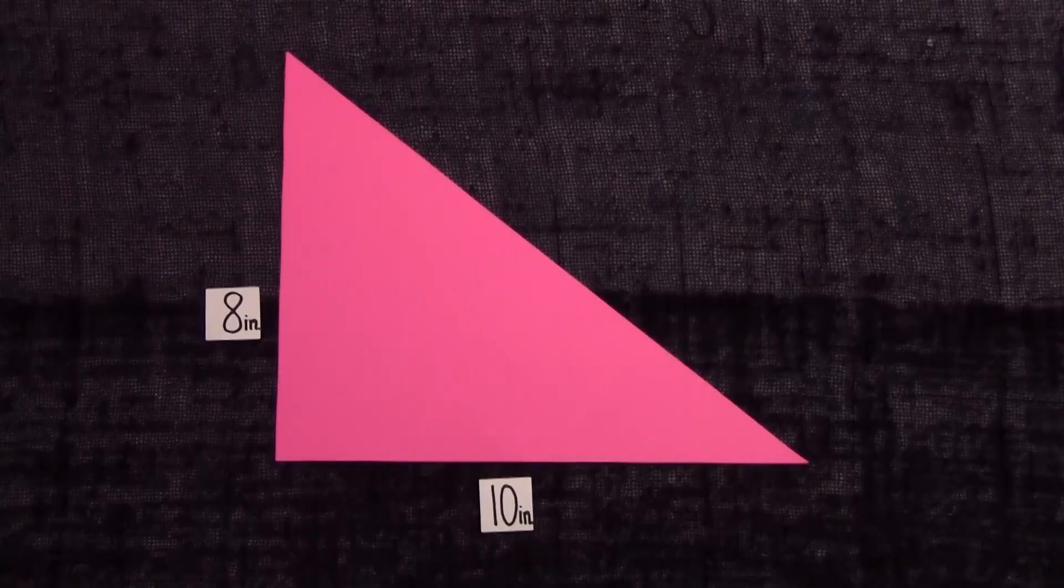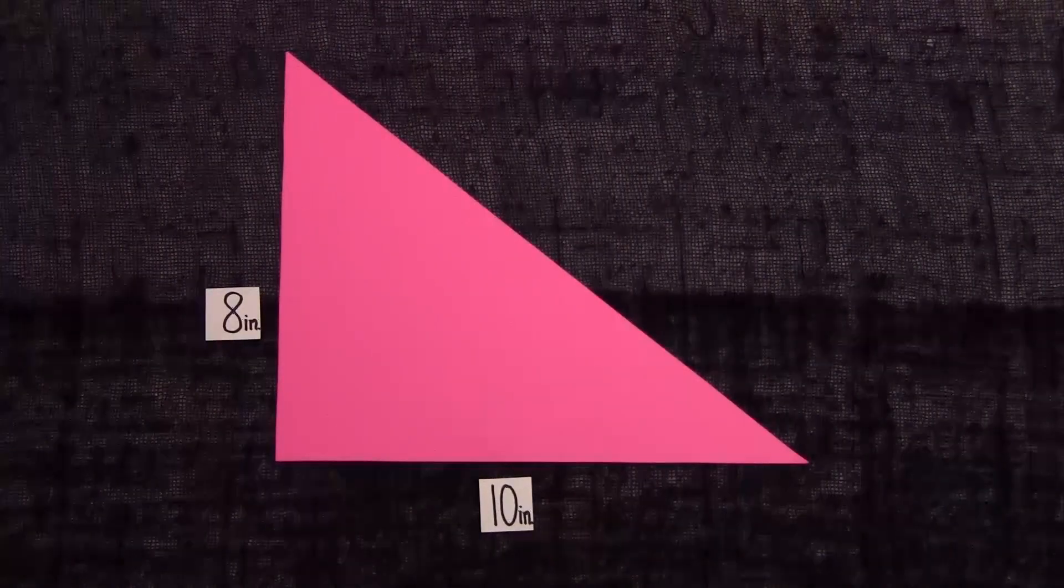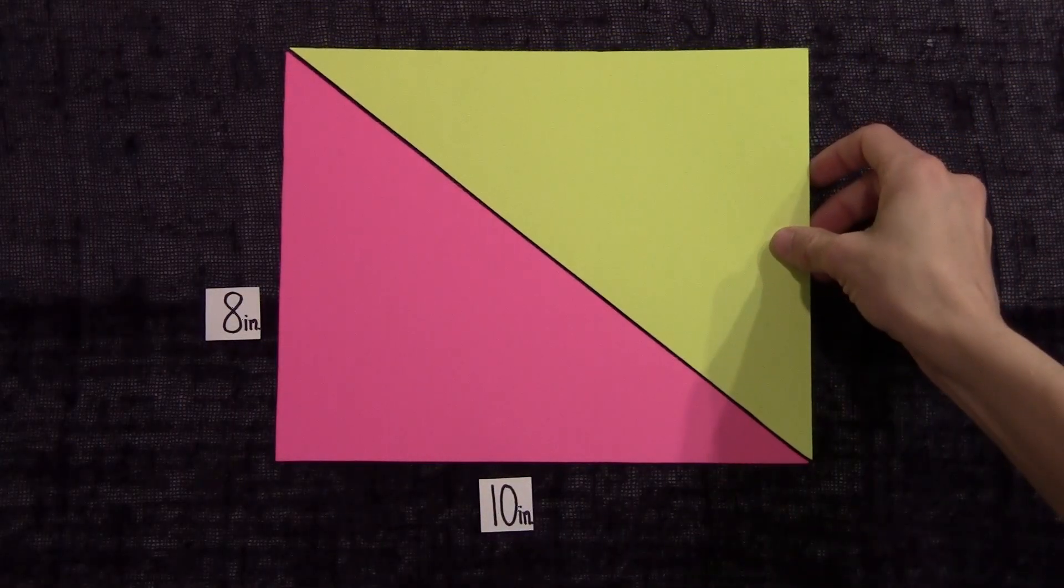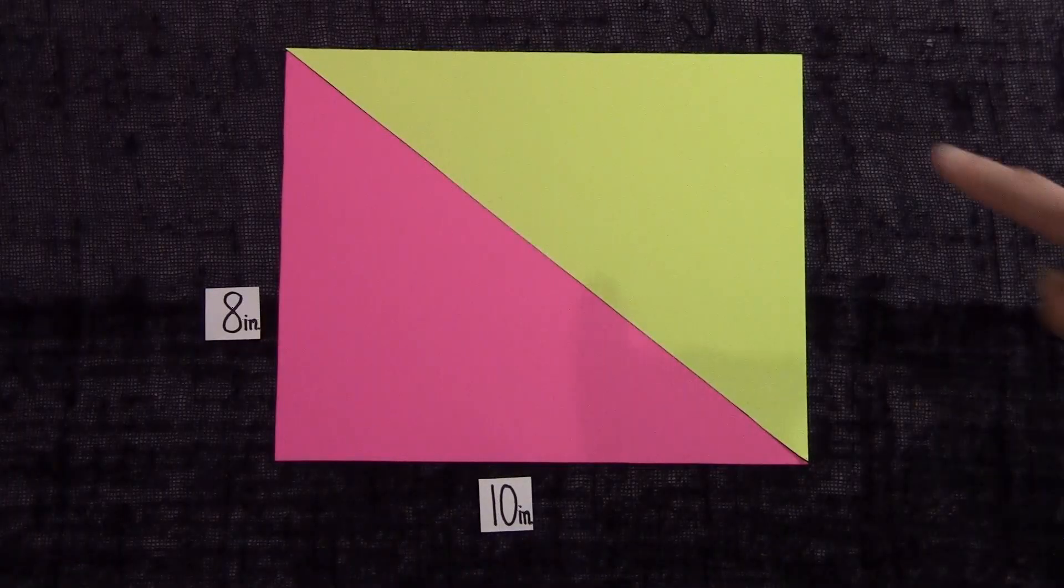We want to know the area, or how many square inches the space inside can hold. So I'm going to take another triangle, same size and shape, or congruent to this one, just in a different color to help you see.